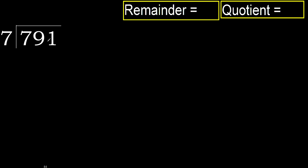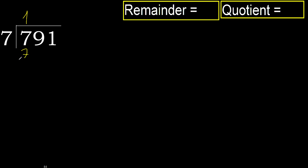791 divided by 7. 7 is not less, therefore start with 7. 7 multiplied by which number is nearest to 7 but not greater? 7 multiplied by 2 is 14, which is greater. Multiply by 1: 7 is not greater. Subtract: 7 minus 7 equals 0.